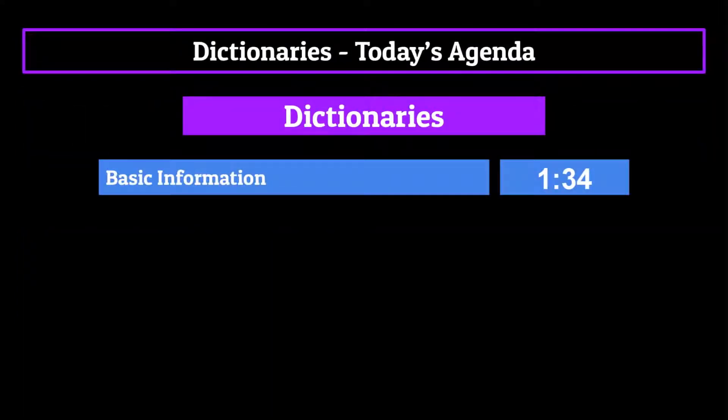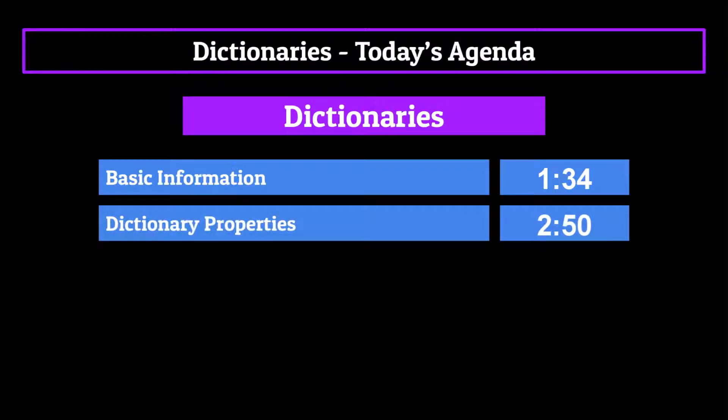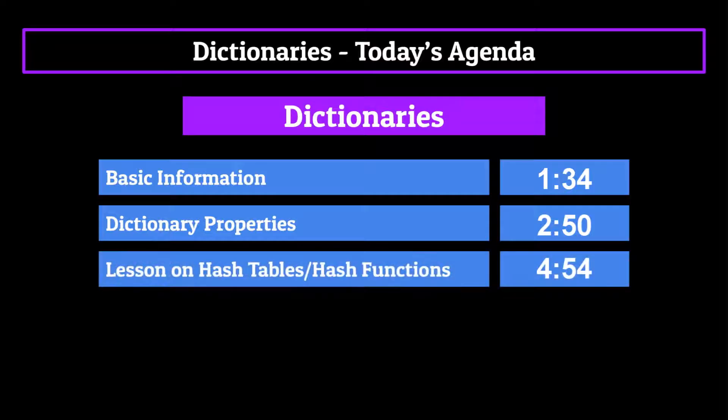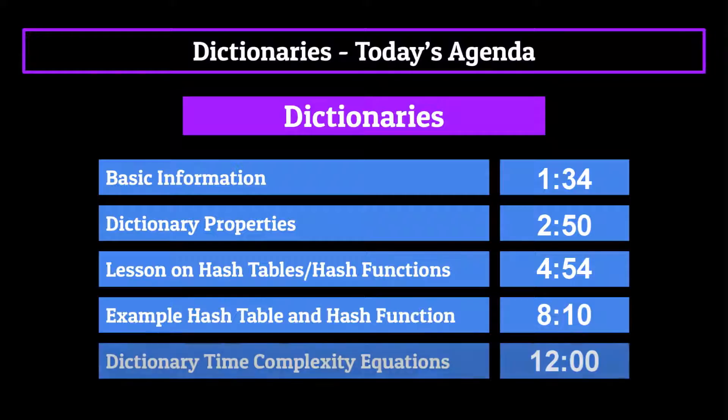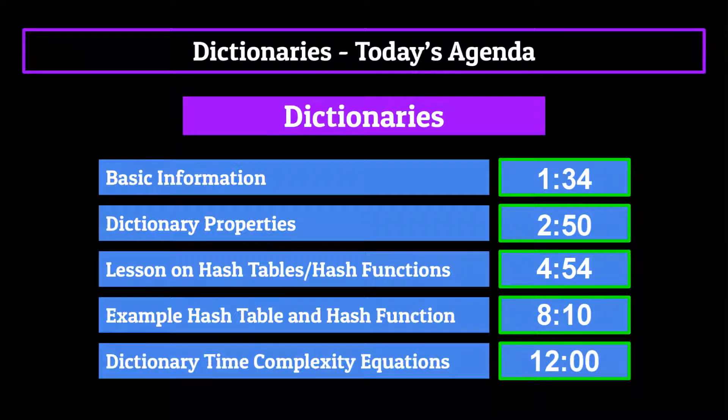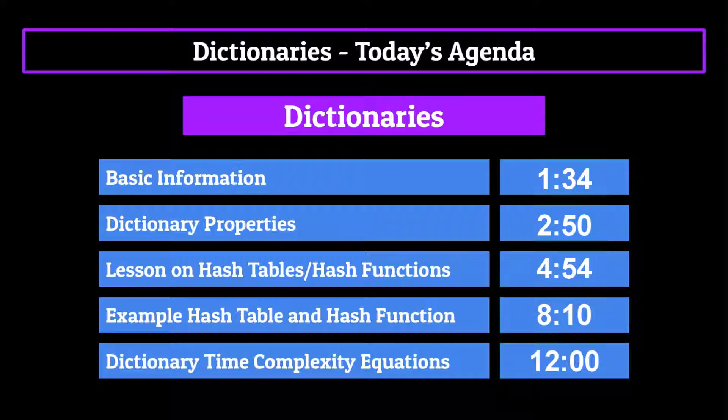First, we'll be covering some basic information about the dictionary. Then we'll talk about some of the properties associated with dictionaries, such as some of the restrictions which come with using them. Then we'll take a quick detour and talk a little bit about hash tables and hash functions. Then we'll do an example with hash tables and hash functions. And then with that knowledge, we'll be able to cover the time complexity equations surrounding the dictionary to close out the episode. The timestamps on your screen will take you to each of these topics. So feel free to skip around if you want.